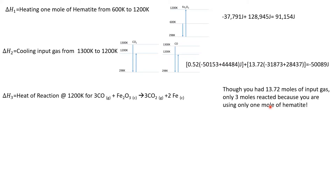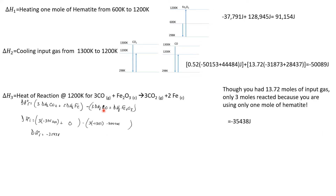Delta H3 is the heat of reaction. We went to all that trouble to figure out the moles coming in and out. We have 13.72 moles of input CO, but only 3 moles react because we're using one mole of hematite. Using Hess's Law, I calculated negative 35,438 joules for the heat of reaction.